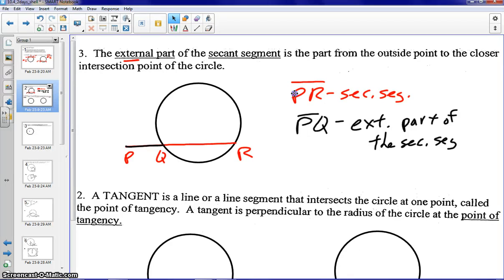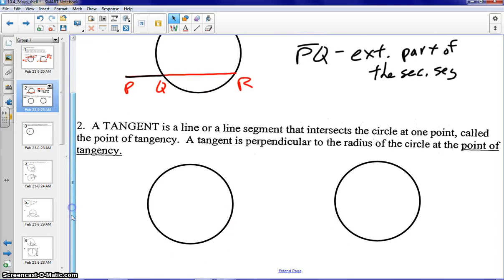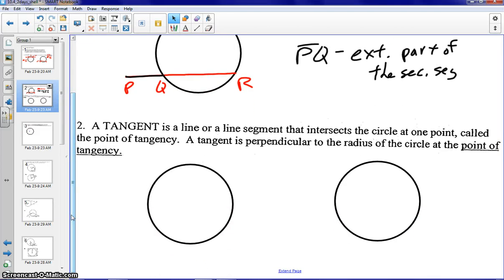Our next definition, going back to number two here, is a tangent. A tangent can also be a line or a segment that intersects the circle at one point. So if we have an example of a line, it would hit at one point, and that point is what we call the point of tangency.